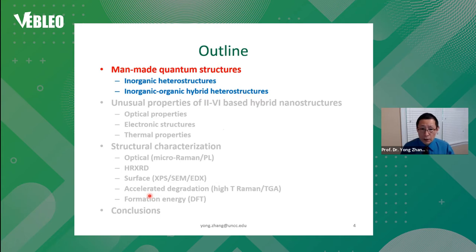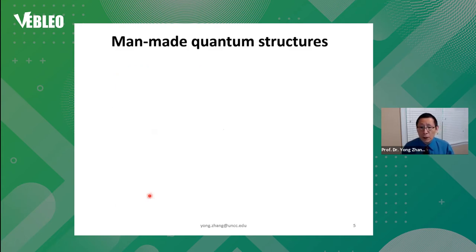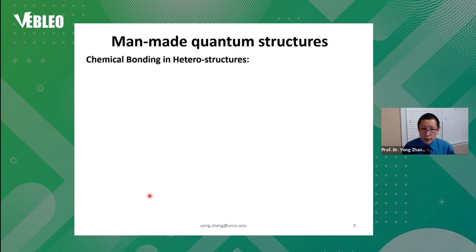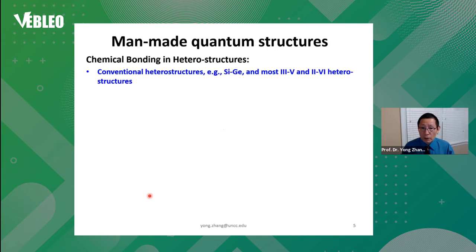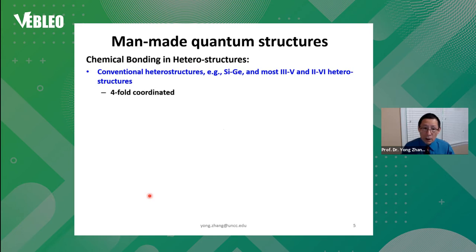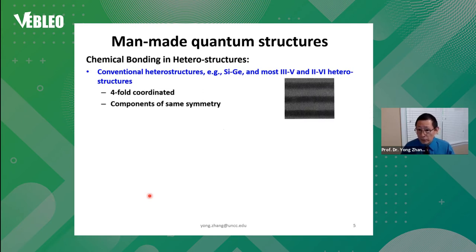So here's the first part on man-made quantum structures. There are multiple types of quantum structures or heterostructures based on the chemical bonding in the structure. The conventional ones involve making group 4, or between 3-5 or 2-6. These all have 4-coordinate bonding and the same symmetry, so it's easier to join them together. However, they cannot make a perfect structure as what you see on the right-hand side.